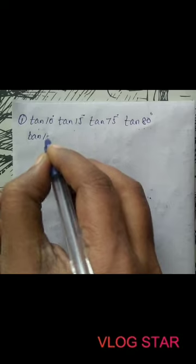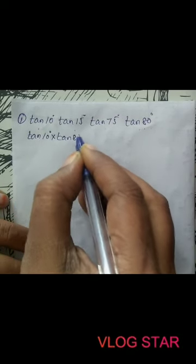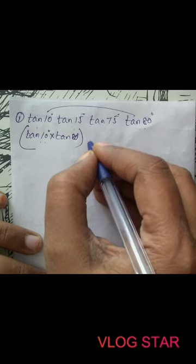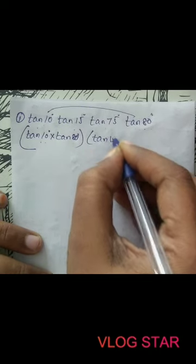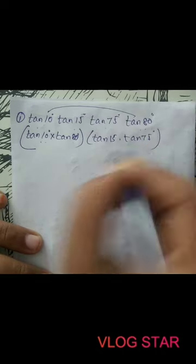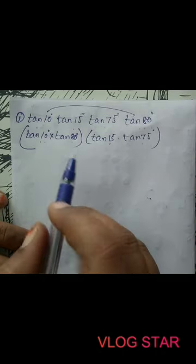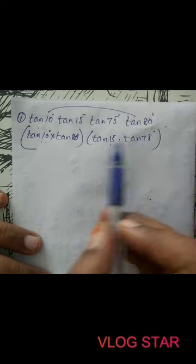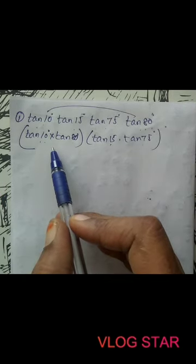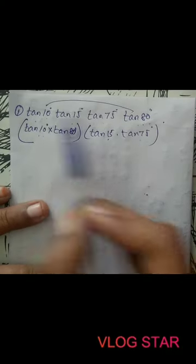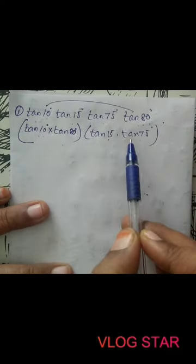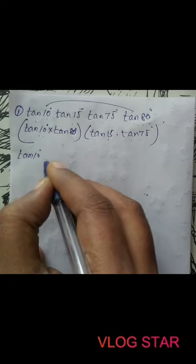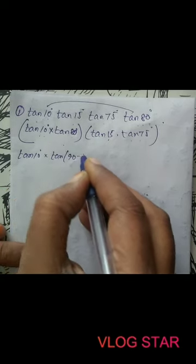So, I group tan(10°) and tan(80°) together, since 10 + 80 = 90°. Next, I group tan(15°) and tan(75°), since 15 + 75 = 90°. Now, tan(80°) can be written as tan(90° − 10°).